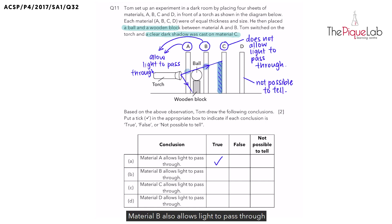What about material B? Material B also allows light to pass through. Based on what we said, yes, material B allows light to pass through. What about material C? Does material C allow light to pass through? No. This statement is false.